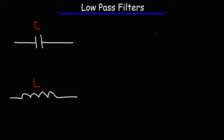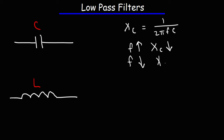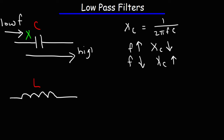Regarding capacitors and inductors: the capacitive reactance is 1 over 2πFC, so as we increase the frequency, the capacitive reactance decreases — these two are inversely related. And if we decrease the frequency, the capacitive reactance increases. So the impedance is high when the frequency is low, meaning capacitors block low-frequency signals and greatly impede them. The impedance is low when the frequency is high, which means capacitors allow high-frequency signals to pass through relatively unimpeded.